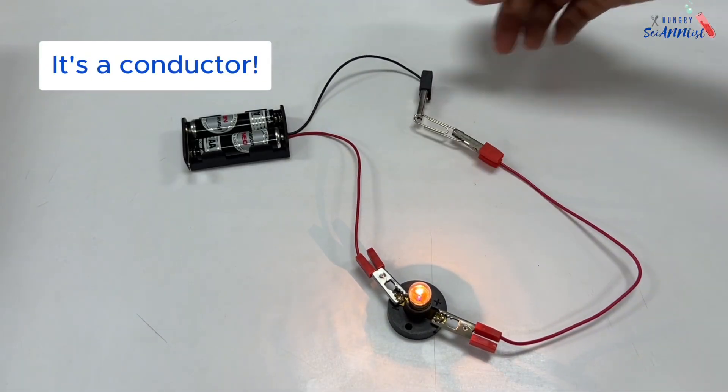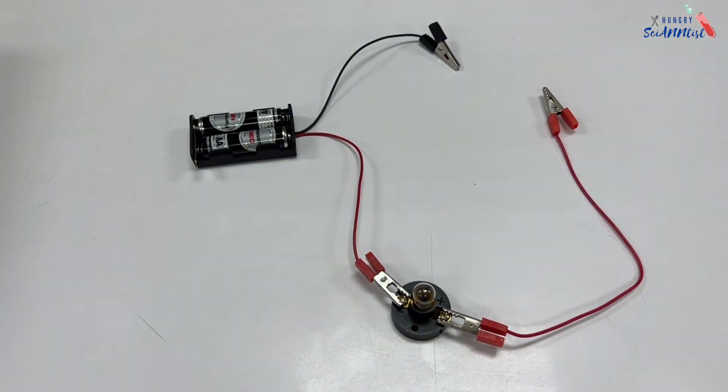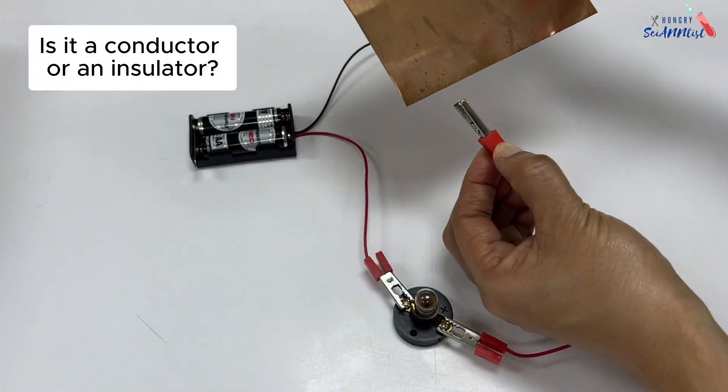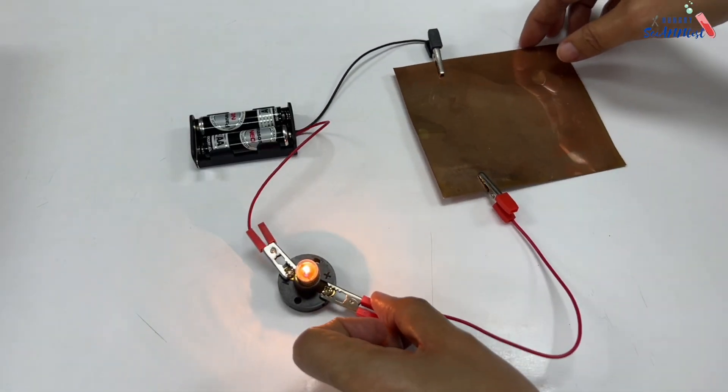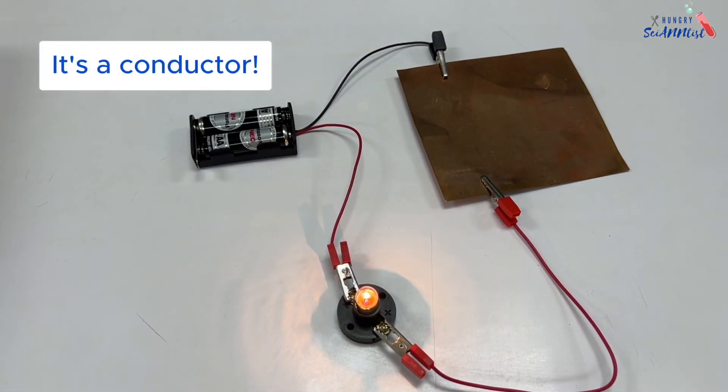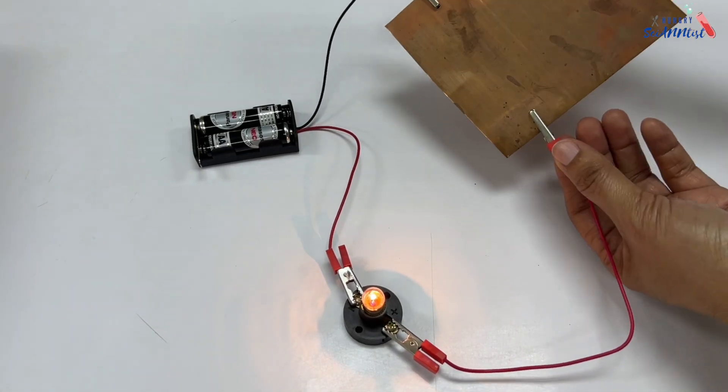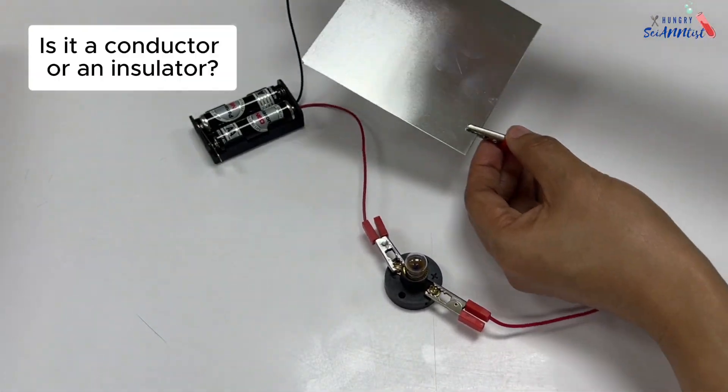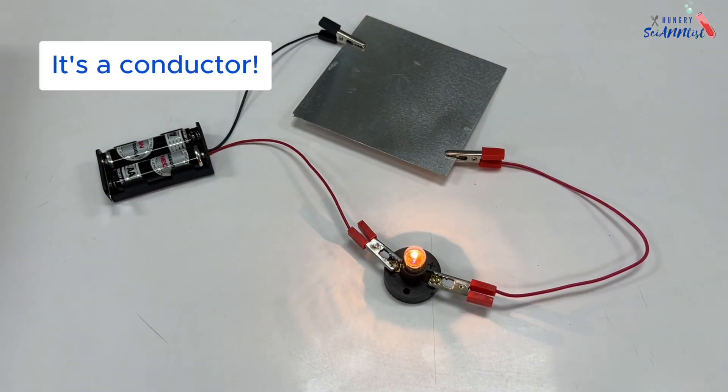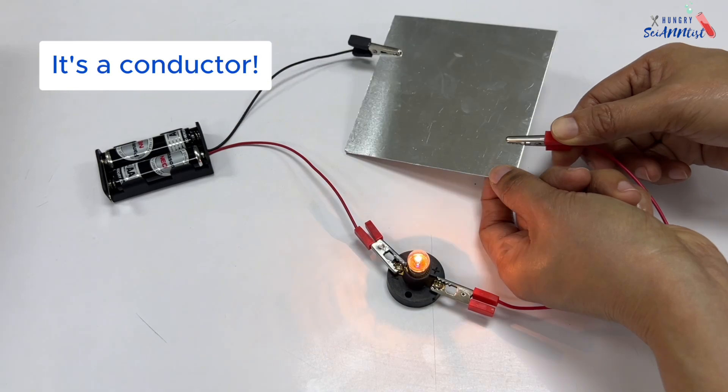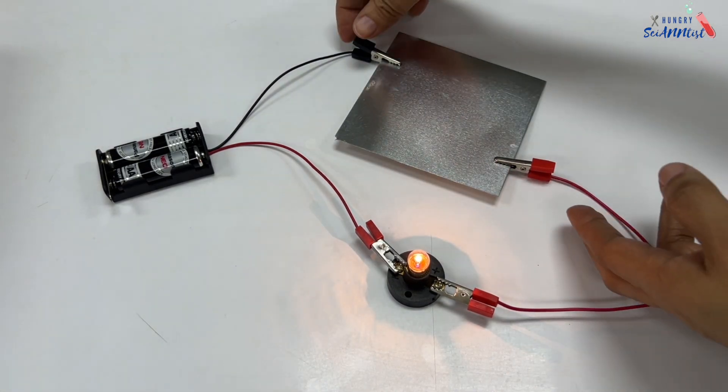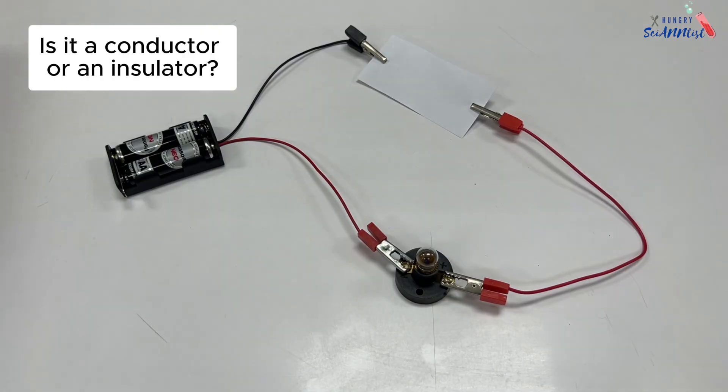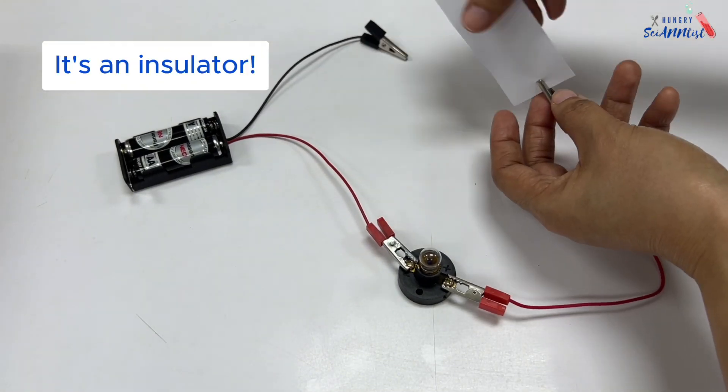A paper clip is a conductor. A copper sheet is a conductor. An aluminum sheet is a conductor. A paper is an insulator.